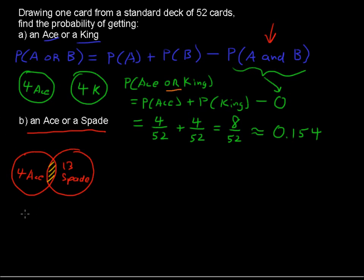When we write this out as a probability, the probability of an ace or a spade equals the probability of an ace, plus the probability of a spade, minus the probability of both.